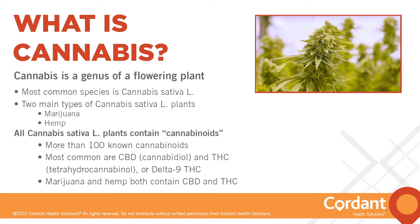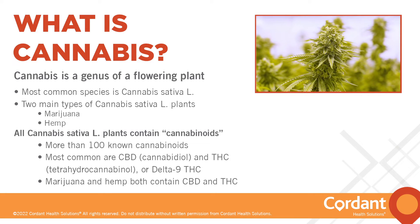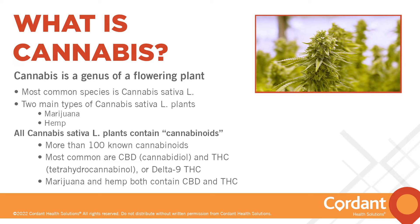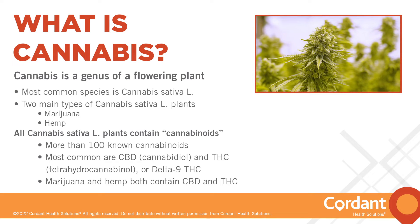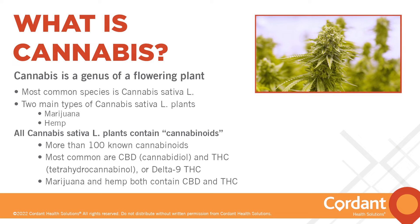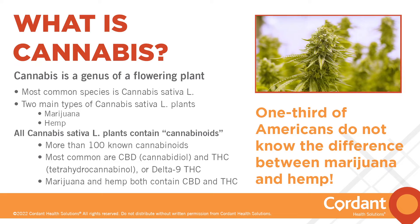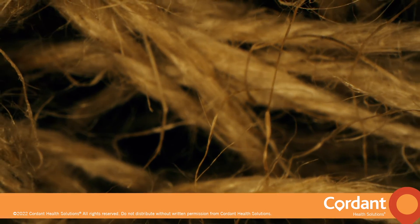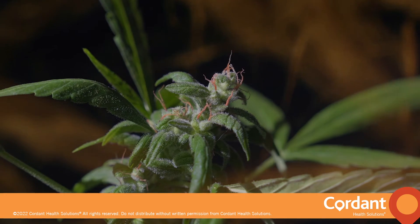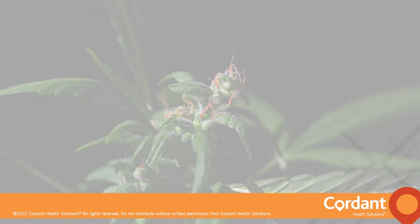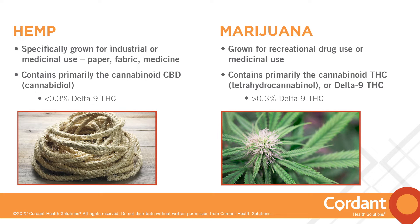Both the marijuana and hemp plants naturally contain both CBD and delta-9 THC. However, what makes them very different is the level of these two cannabinoids in the plant. According to the National Institute of Health, one third of Americans do not know the difference. They both come from the same plant — Cannabis sativa — but they are not the same thing. Most important is the difference in their delta-9 THC content. Hemp is defined by its low-level delta-9 THC of less than 0.3 percent.